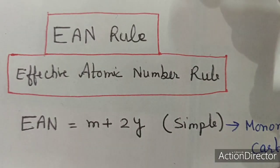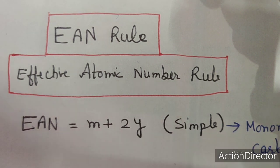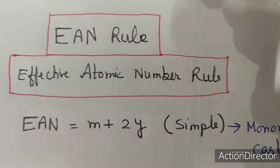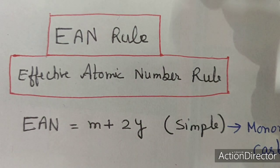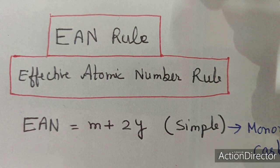Dear students, in this topic we will discuss about the EAN rule — the Effective Atomic Number rule. This rule describes the stability of any organometallic compound.